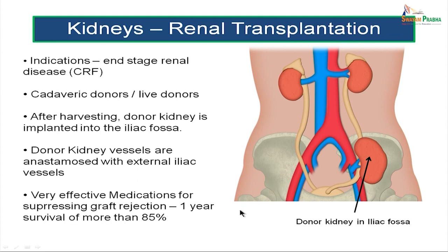Renal transplantation is commonly indicated for end-stage renal disease, also called chronic renal failure. The kidney is usually sourced from cadaveric or live donors, and after harvesting, the donor kidney is implanted in the iliac fossa — not its original location. The renal vessels are anastomosed with the external iliac vessels. There are very effective medications for suppressing graft rejection, and the one-year survival rates for transplanted kidneys are now more than 85%.